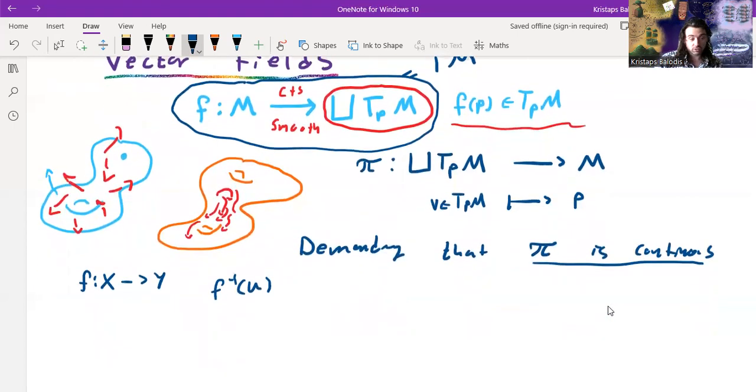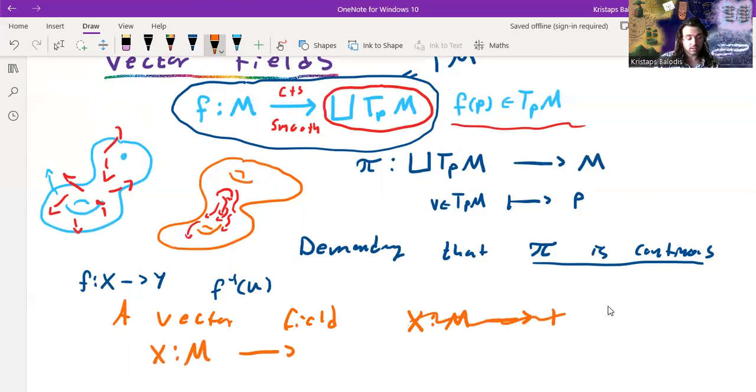And so this is going to be our definition of a vector field. That is, a vector field is simply the choice of a smooth map. So a smooth map, sometimes we denote these with a capital X, so it's going to be a smooth map from our manifold M into its tangent bundle.